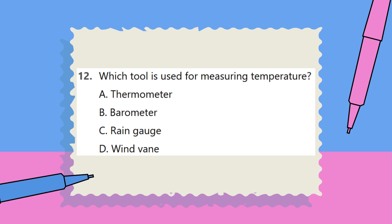Question 12. Which tool is used for measuring temperature? A. Thermometer. B. Barometer. C. Rain gauge. D. Wind vane.